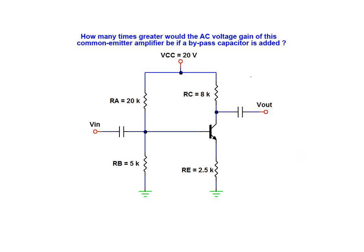Having assigned sample values to the elements in the circuit we are asked how many times greater would the AC voltage gain of this common emitter amplifier be if a bypass capacitor was added to the circuit. We will begin our analysis by outlining the steps required to solve this example problem.